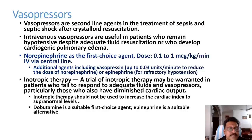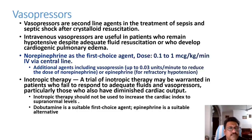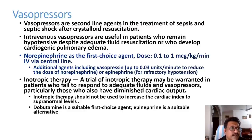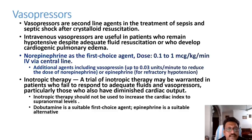If hypotension is not corrected with initial fluid resuscitation, vasopressors are started. The first-line vasopressor is norepinephrine, at a dose of 0.1 to 1 microgram per kg per minute IV. It must be given through a central line — peripheral administration carries a high risk of gangrene. If the patient does not improve with initial doses, the dose can be titrated upward, or another vasopressor can be added.